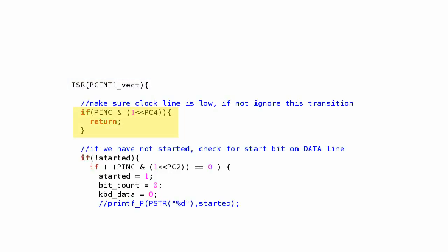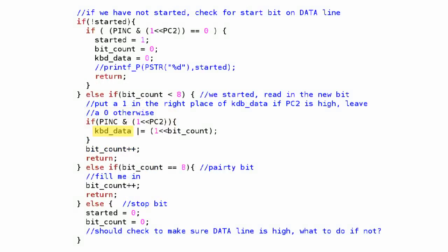Inside the handler, we have a little logic to actually read the pin and verify that the clock line is currently low. Then we simply read the current value of the data line and read that into our variable. After 11 bits, our kbd_data variable will hold the scan code.